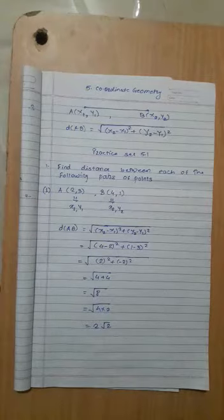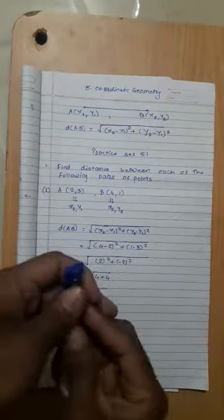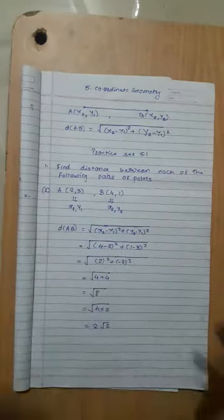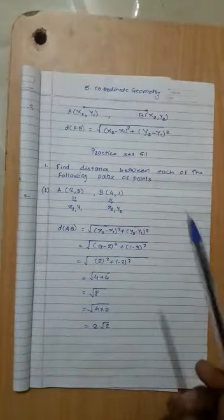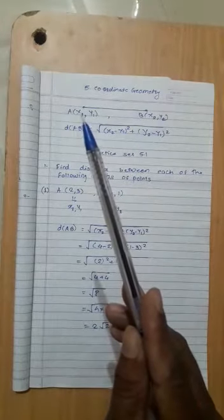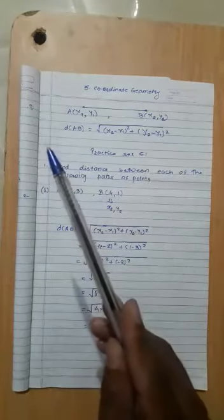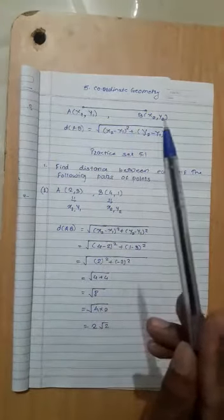Hello everyone, now we are going to start with chapter number 5: coordinate geometry. First of all, distance formula. Suppose we have two points: coordinate of A is (x1, y1) and coordinate of B is (x2, y2). Then distance between point A and B is square root of [(x2 minus x1) squared plus (y2 minus y1) squared].